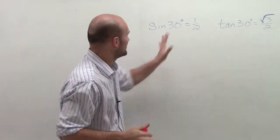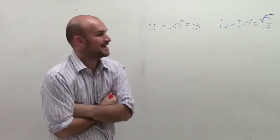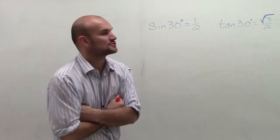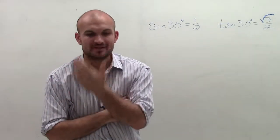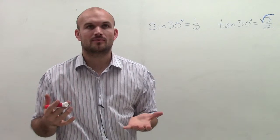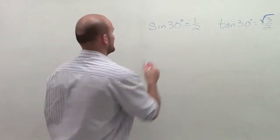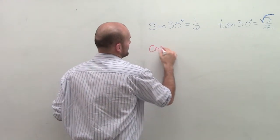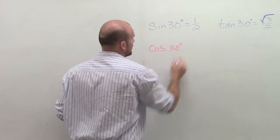OK, here we go. What I have is sine of 30 degrees equals 1/2, and the tangent of 30 degrees equals square root of 3 over 2. So we're looking at this problem, and we want to think about... Oh yeah, I want to figure out what is the cosine of 30 degrees.